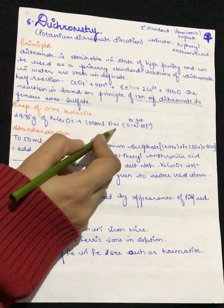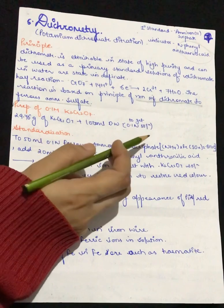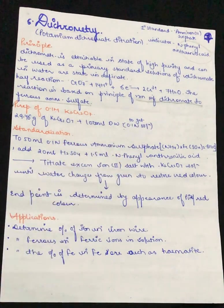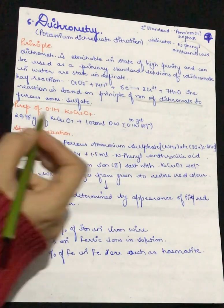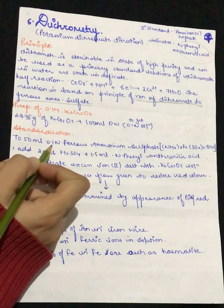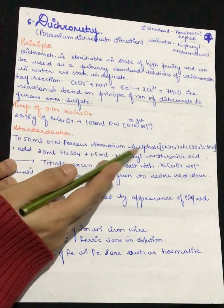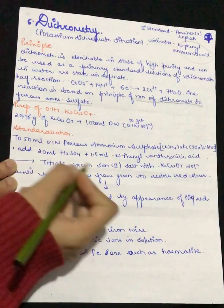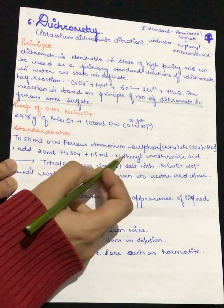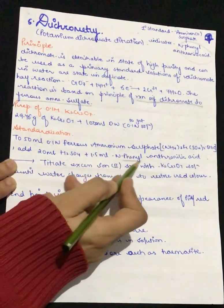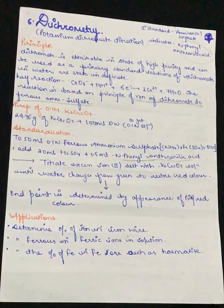For standardization of dichrometry, to 250 ml of 0.1 normal ferrous ammonium sulfate, we will be adding 20 ml sulfuric acid and 1.5 ml N-phenyl anthranilic acid that is working as an indicator. Because of this we will get color change.